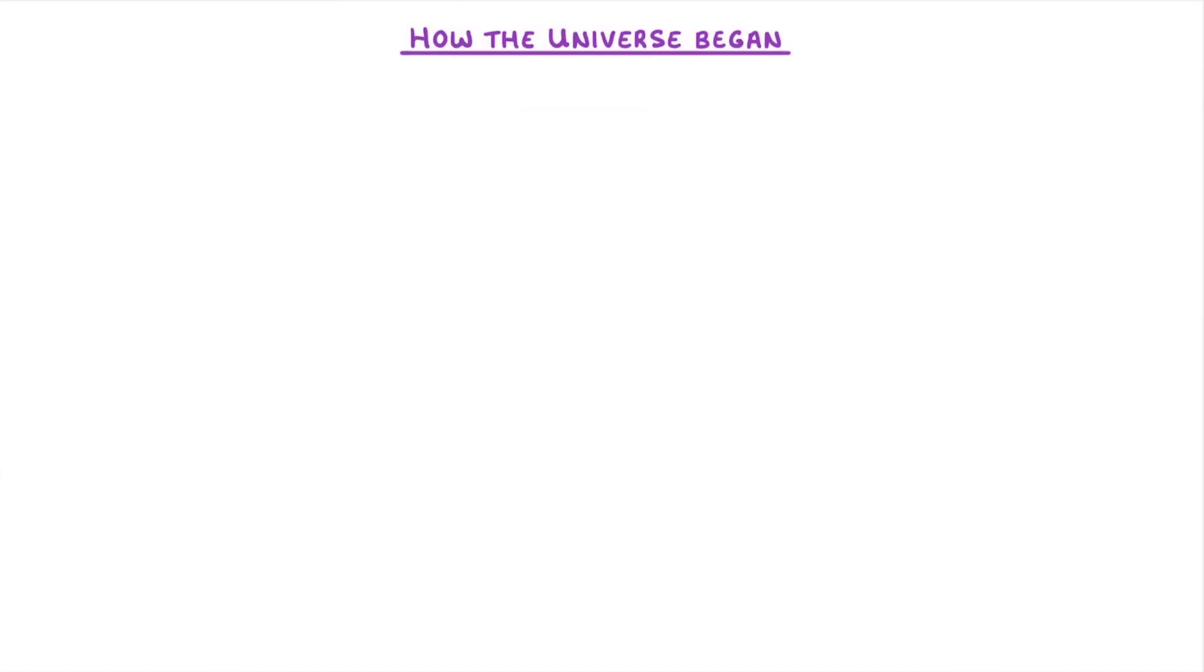The last thing we need to look at is how the universe began. If the universe is currently expanding, then it makes sense that in the past the universe was smaller. And if we continue this line of reasoning, then at some point the universe must have been tiny. So the question really is how does a tiny thing suddenly expand to become a huge, ever-expanding universe?